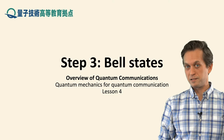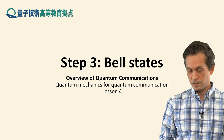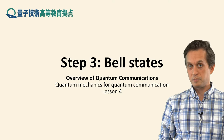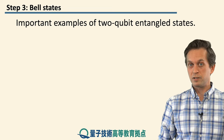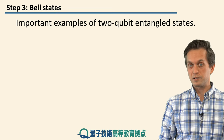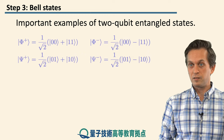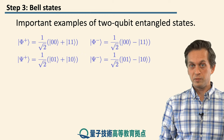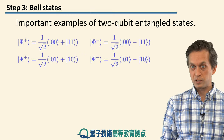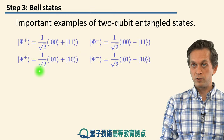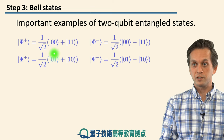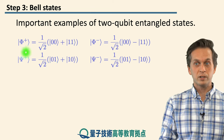Step 3: Bell states. Bell states form a very important class of entangled states of two qubits. There are four of them, and we can write them as follows. We have already encountered the equal superposition of |0,0⟩ plus |1,1⟩ — normally we call that a phi-plus state.